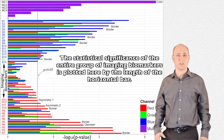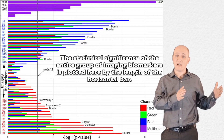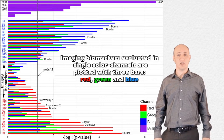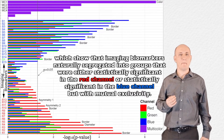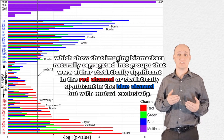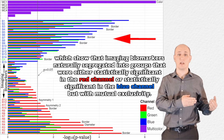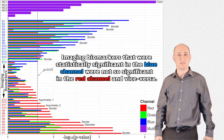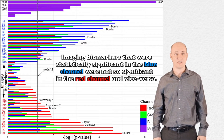The statistical significance of the entire group of imaging biomarkers is plotted here by the length of the horizontal bar. Imaging biomarkers evaluated in single color channels are plotted with three bars — red, green, and blue — which show that imaging biomarkers naturally segregated into groups that were either statistically significant in the red channel or statistically significant in the blue channel, but with mutual exclusivity.